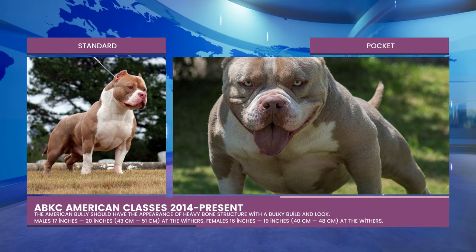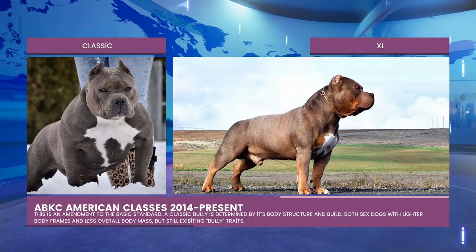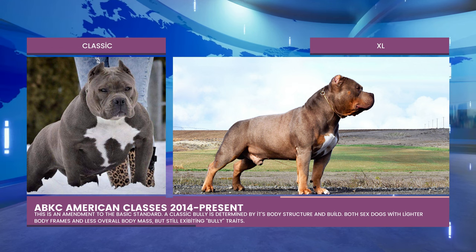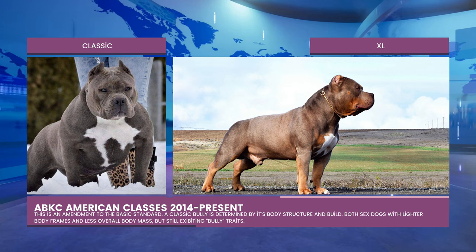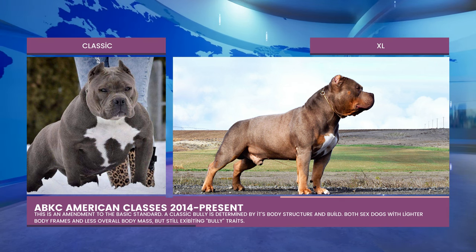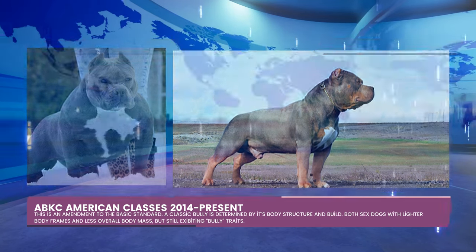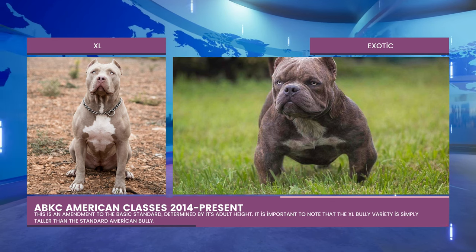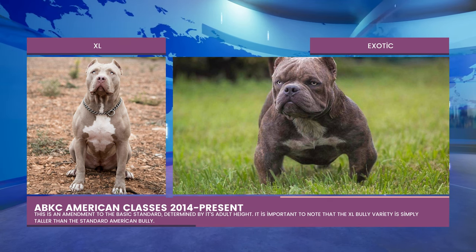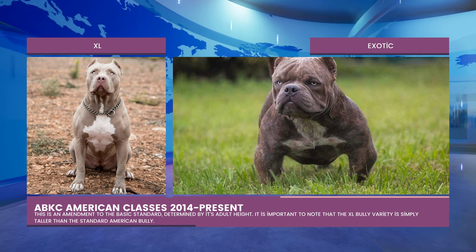The standard American Bully has a bulky build and heavy bone structure: males 17 to 20 inches at the withers, females 16 to 19 inches. The classic variety has lighter body frames and less overall body mass while still exhibiting bully traits — it adheres to the same standards as the standard otherwise. The XL variety is simply taller than the standard, sharing the same physical characteristics: males over 20 to 23 inches at the withers, females over 19 to 22 inches.